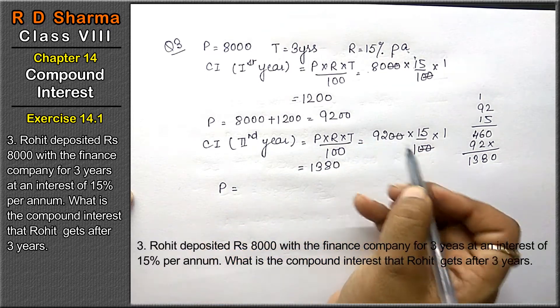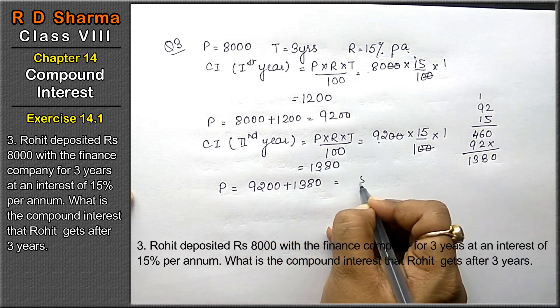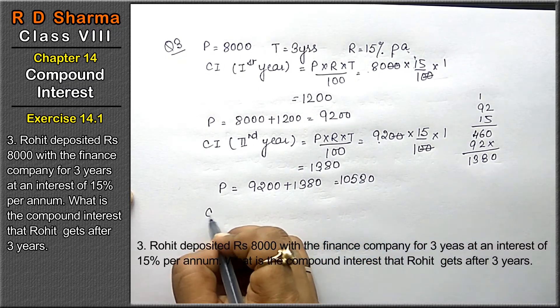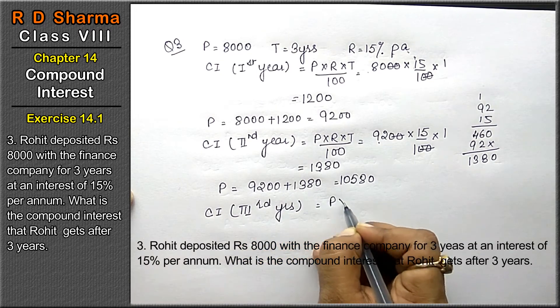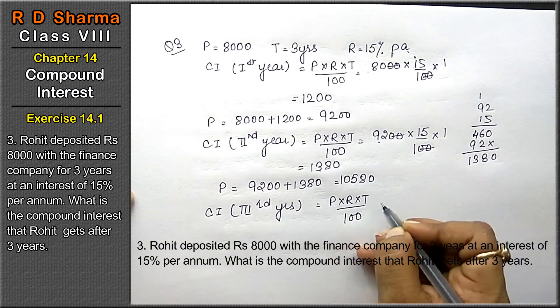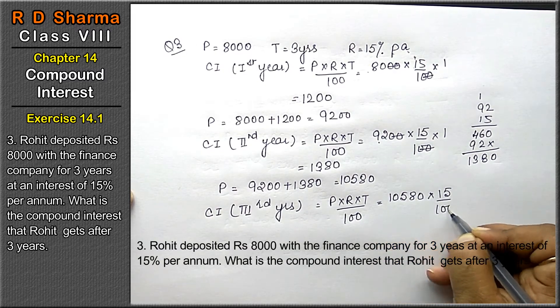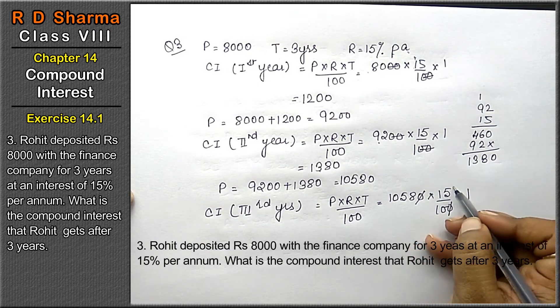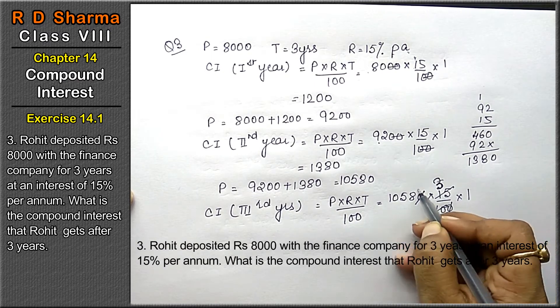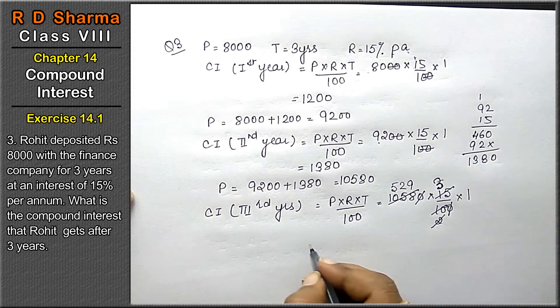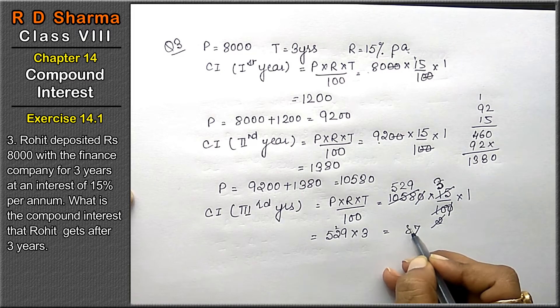Now principle for third year is 9200 plus 1380, that means 10,580. Compound interest for third year equals to P into R into T upon 100. P is 10,580, R is 15%, T is 1 year. Calculating: 10,580 into 15 divided by 100 equals Rs. 1587.